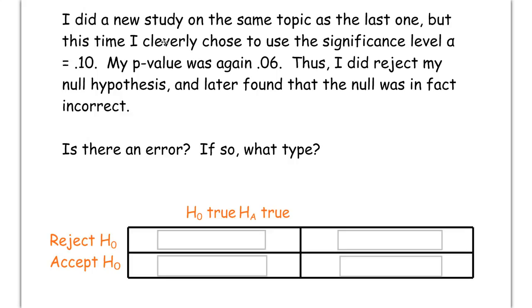So, now, a new study on the exact same thing that we just looked at. Everything else is the same, except what we did is we decided to change the significance level, alpha, from 0.05 to 0.10. The p-value was the same this time, 0.06. But, because alpha was higher, we rejected the null and later found out the null was, in fact, correct. So, in that case, if you reject the null and the null was correct, that's a type 1 error.